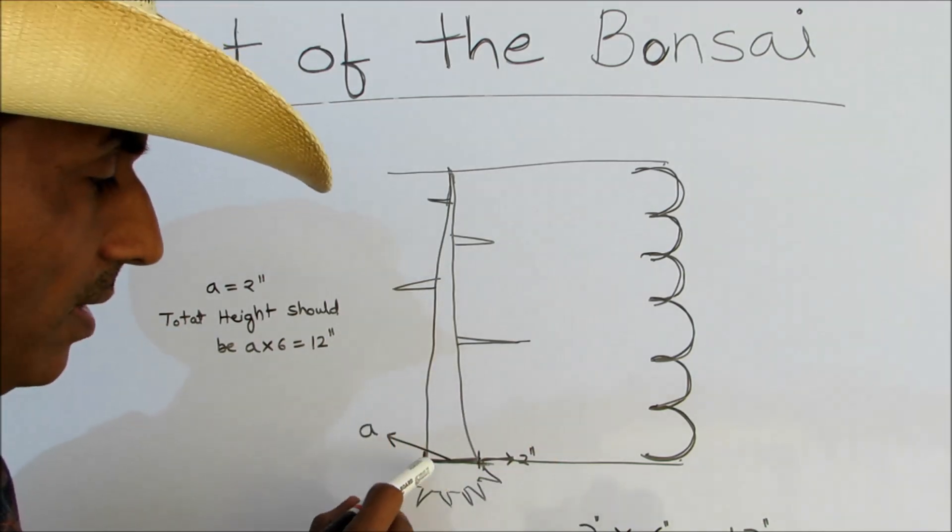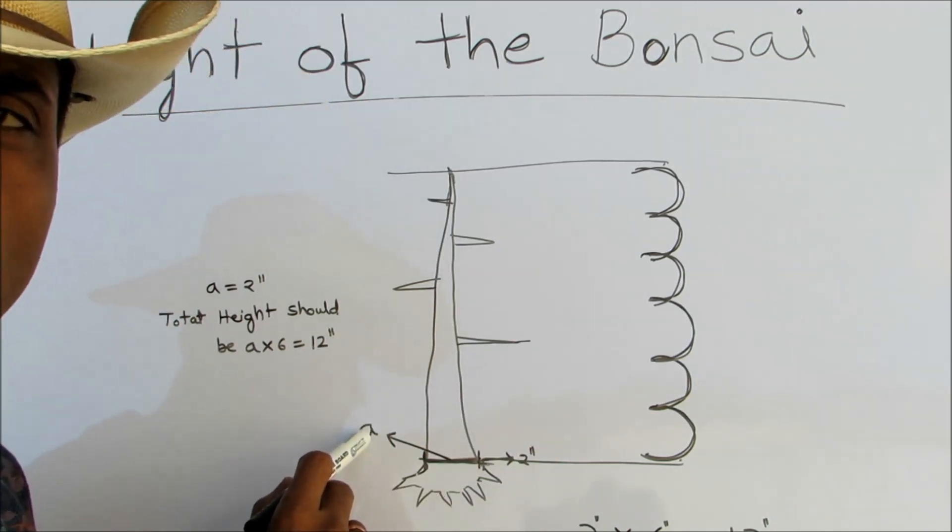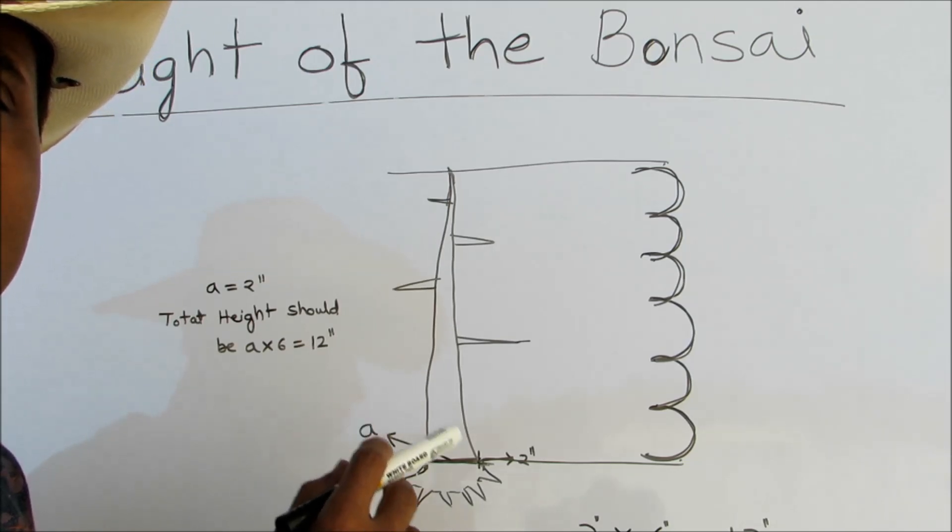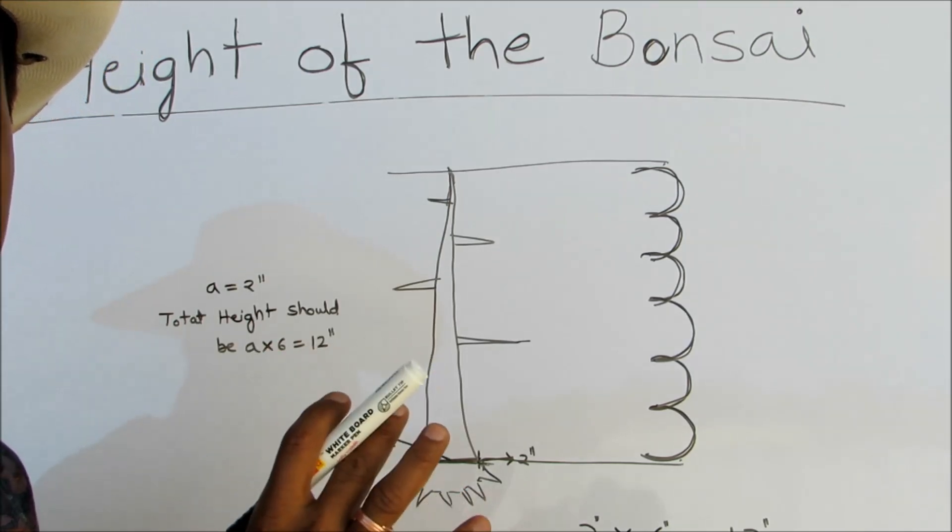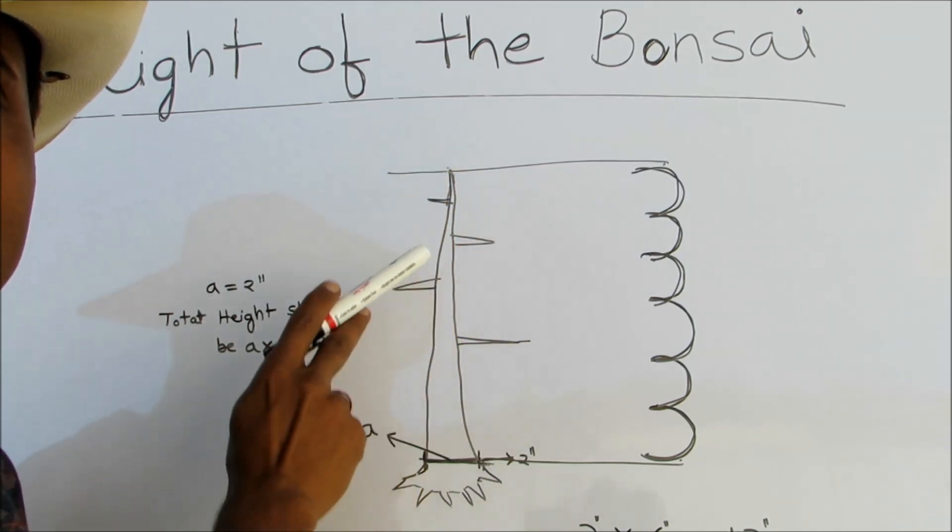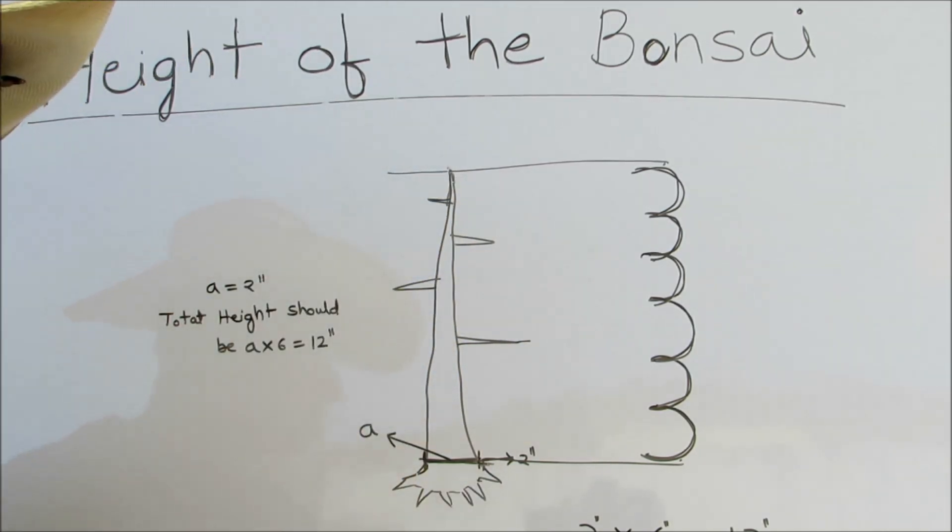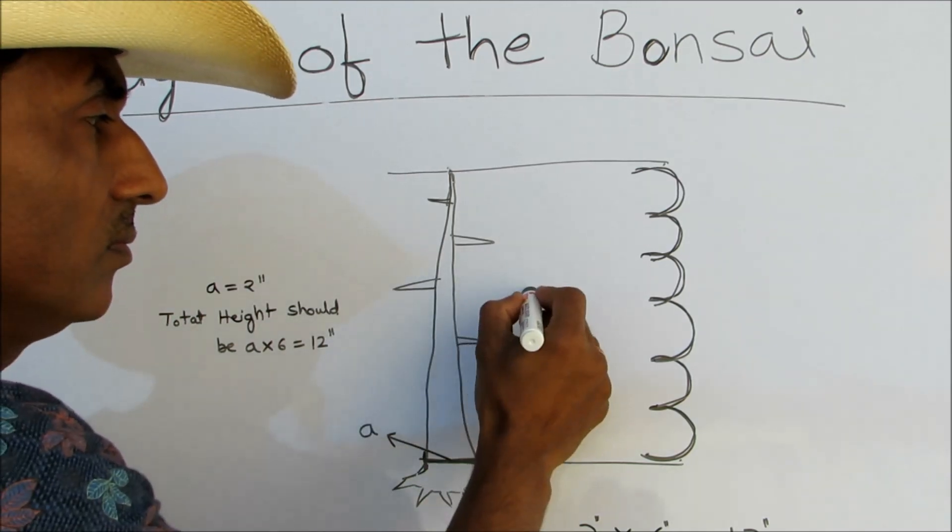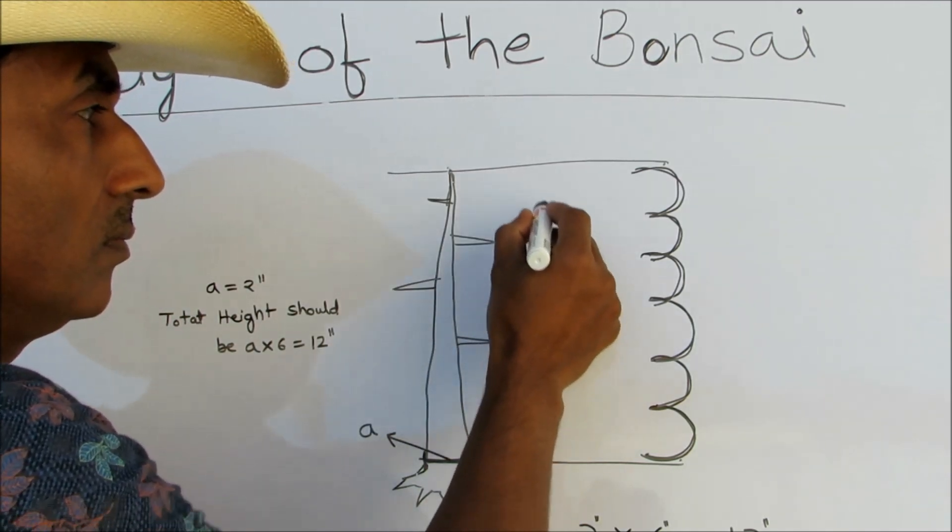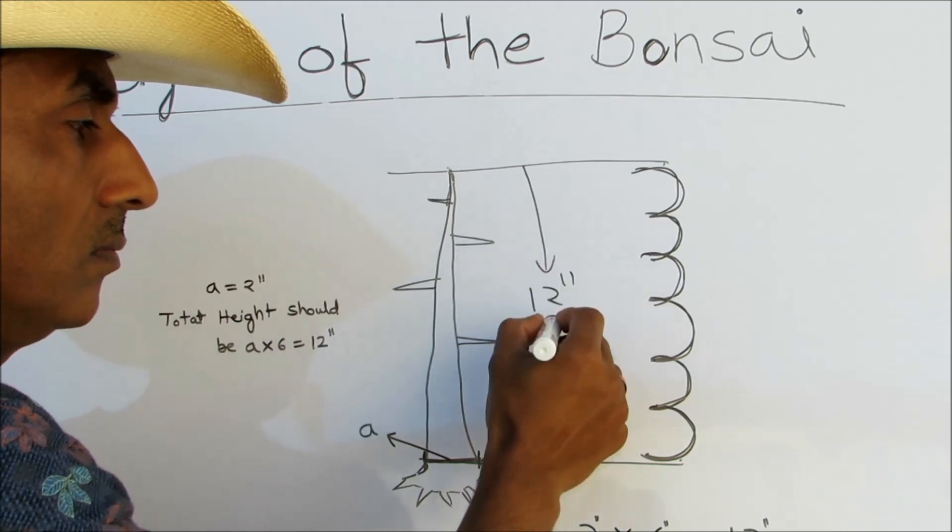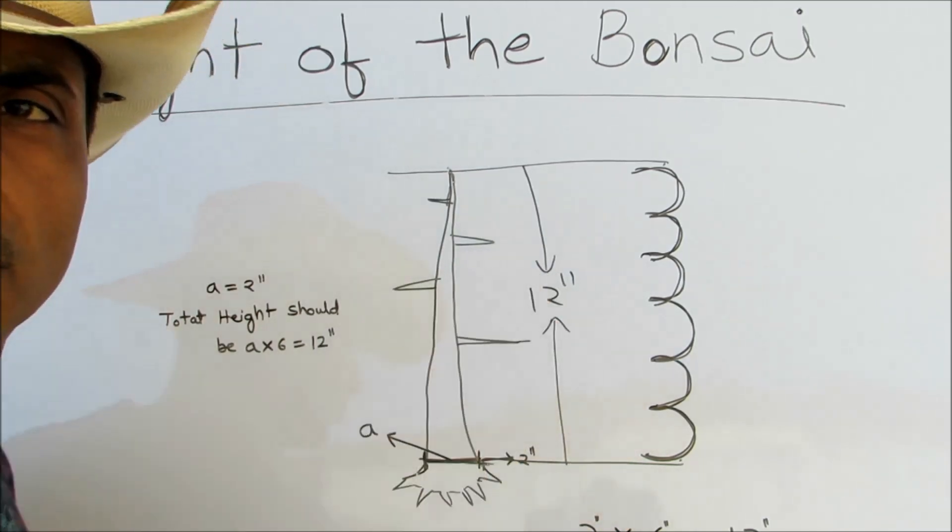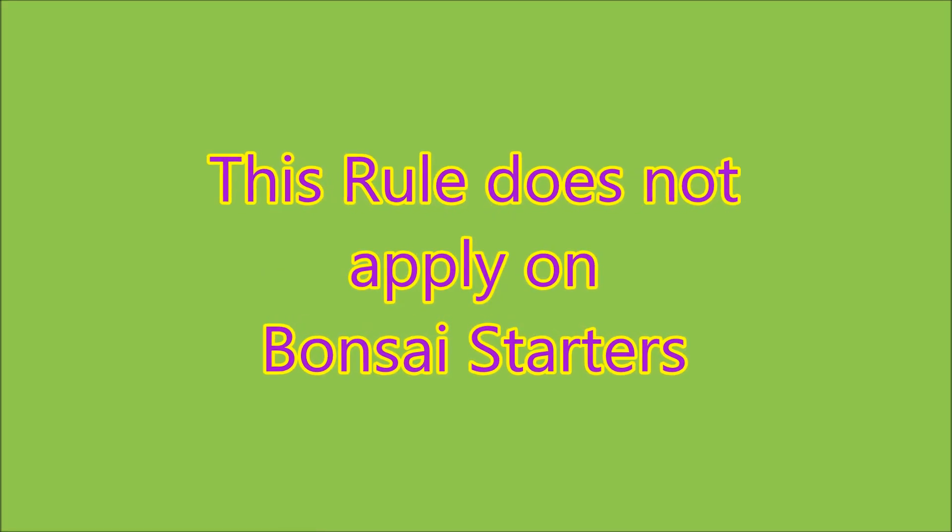2 inches multiplied by 6 is 12, so the total height of the bonsai should be 12 inches.